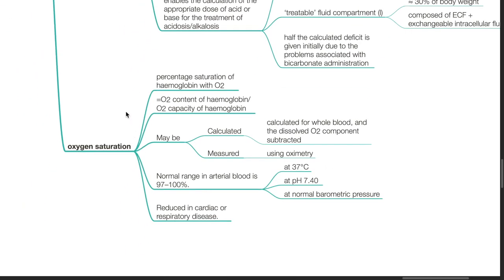Oxygen saturation is the percentage saturation of haemoglobin with oxygen, and equals oxygen content of haemoglobin divided by oxygen capacity of haemoglobin. It may be calculated for whole blood with the dissolved oxygen component subtracted, or it can be measured using oximetry. The normal range of oxygen saturation in arterial blood is 97 to 100% at 37 degrees Celsius, pH of 7.40, and normal barometric pressure. It is reduced in cardiac or respiratory diseases.